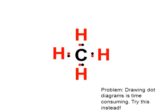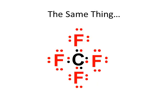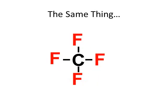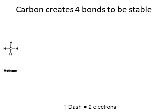These are called Lewis dot diagrams, but they can be time consuming to draw. Instead, simply use dashes — each dash represents two electrons. This dash diagram with carbon in the middle and four fluorines around the outside is much simpler than the dot diagram. One dash equals two electrons. Because carbon can bond up to four times, it's often involved in very complex molecules.